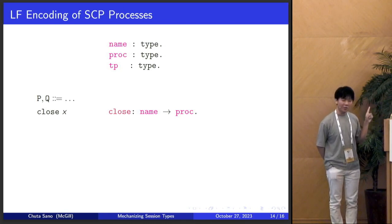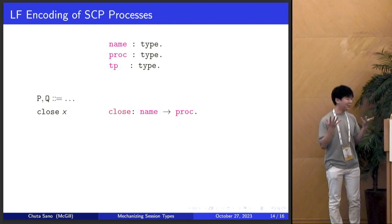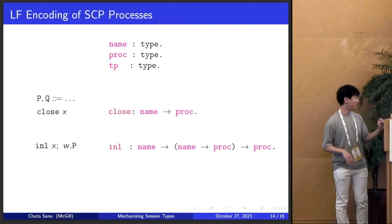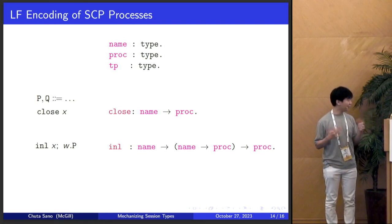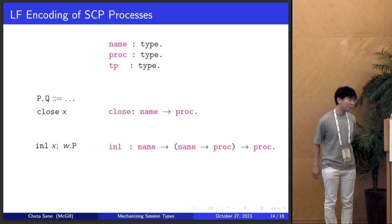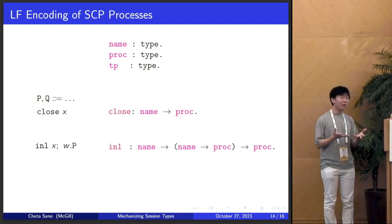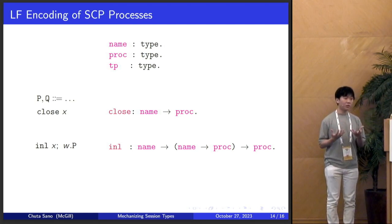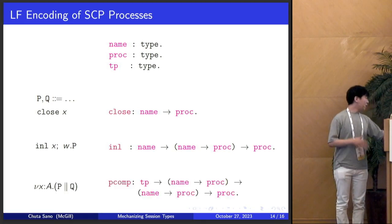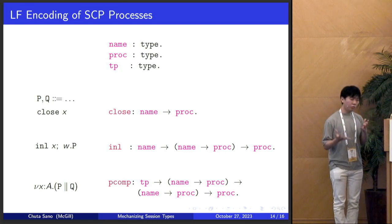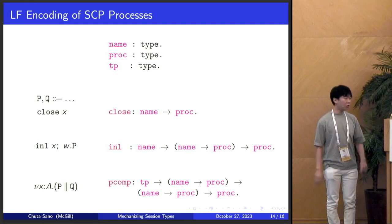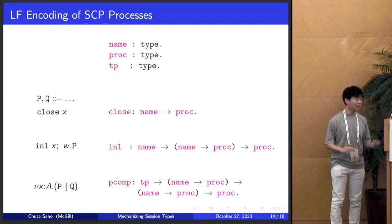Starting with something simple: how do we encode the SCP process 'close x'? It's just a constructor that takes in a name — very simple. For the in-left process, the constructor takes a name (that's x), and the second argument is a function 'name arrow proc' — that's what encodes the binding of w.p, as a literal intuitionistic function in LF. In parallel composition we play the same game: p and q are bound to these fresh channels x, so both p and q are encoded as 'name arrow proc' — functions that take a name and output a process.